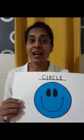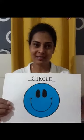Now let us see the objects which are round. This is a round plate. Can you see the round? There are no sides to it. It is round. Circle.